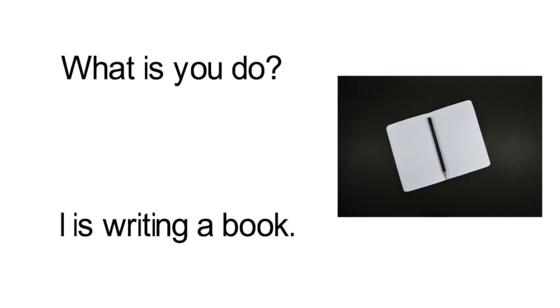What is wrong with this conversation? Well, the question is asking about what someone is doing right now. So we should use the present continuous tense instead of the present simple. So the question should be, what are you doing? Keep in mind that is is not the correct form of to be for you. The correct form is are. Also, the answer is incorrect. The answer should be, I am writing a book. Is is not the correct form of to be for I. Am goes with I.